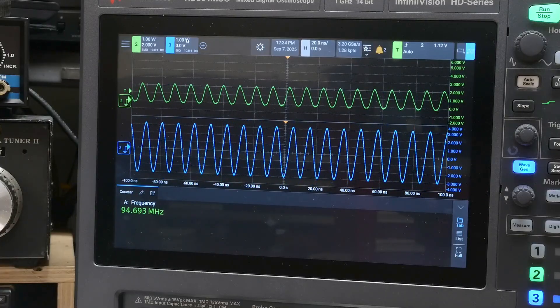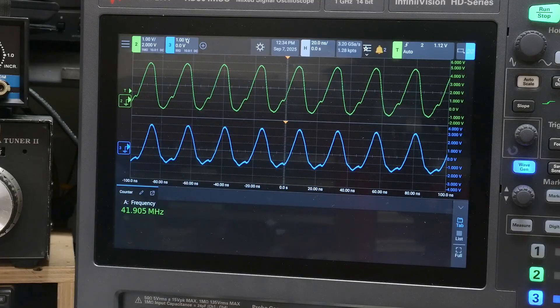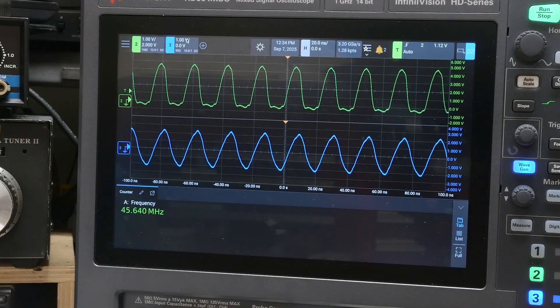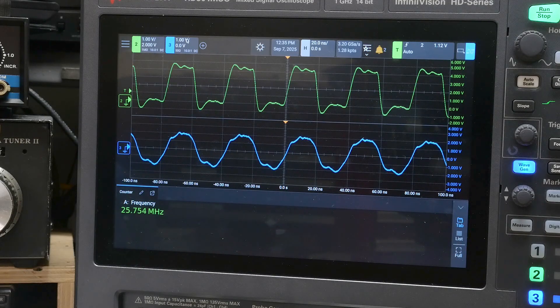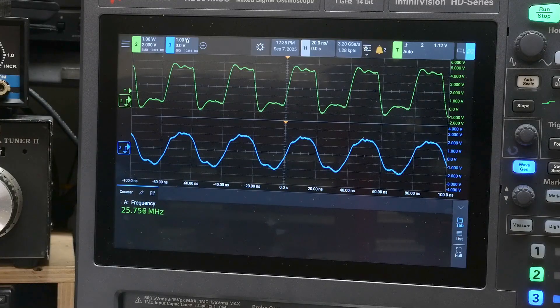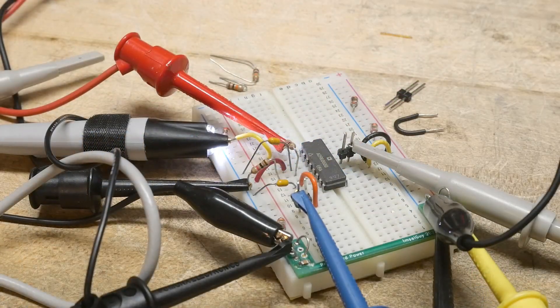So it would make a great input for like a frequency counter or something. Probably need to put an amplifier in front of it to get the voltage swings big enough for the comparator, but I don't know. It's pretty nice. Yeah, it seems to work, seems to work pretty good.